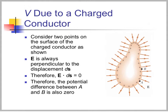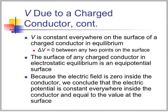What is the potential due to a charged conductor? Looking at two points A and B on the surface of the conductor, E is always perpendicular to the surface. When integrating along the surface to find the potential difference, the path ds is always perpendicular to E, so E dot ds equals zero. Therefore the potential difference between two points on the surface is zero — V is constant everywhere on the surface. Because the electric field is zero inside the conductor, the electric potential is constant everywhere inside and equal to the value at the surface.